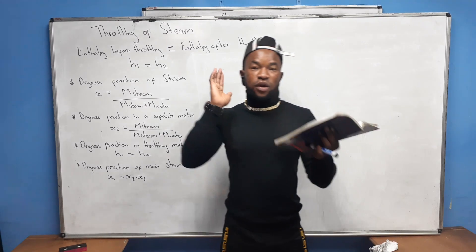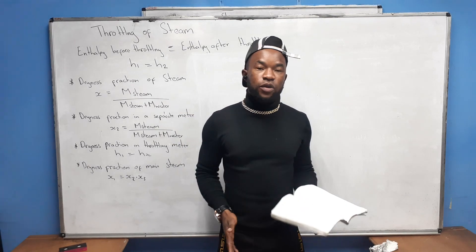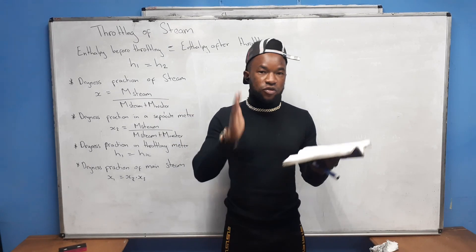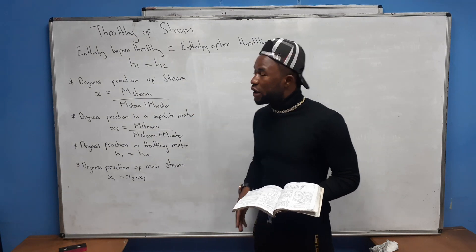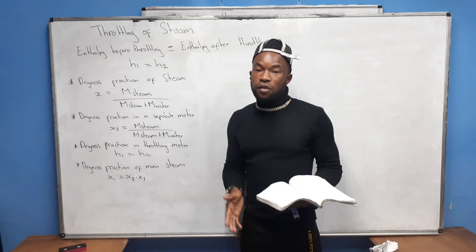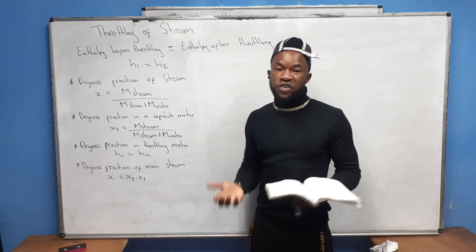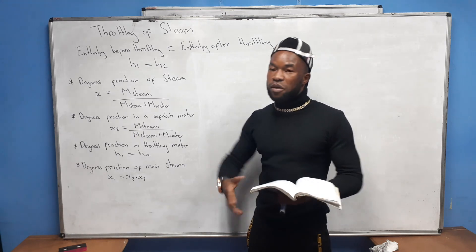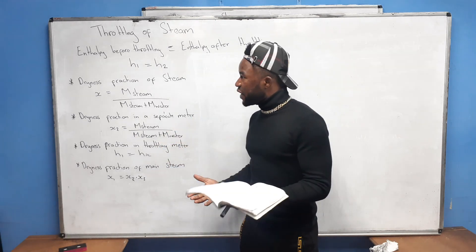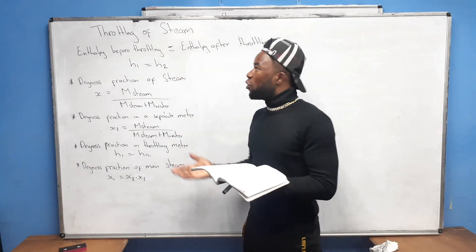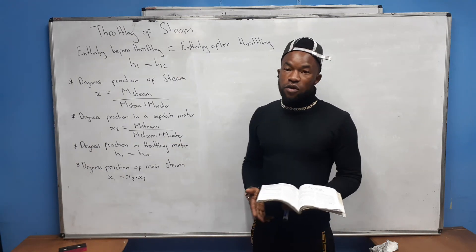Hello once again guys, I'm back with a different subject. For today we want to do Power Machines N5, and I'm going to touch on Chapter 7 which is the throttling of steam. Throttling simply talks about the flow condition of steam — you can have the initial condition and you can also have the final.